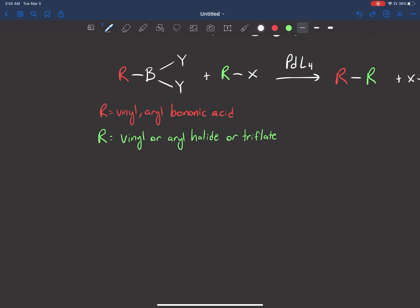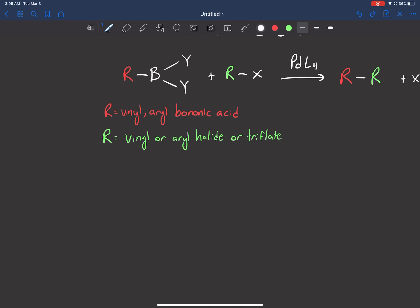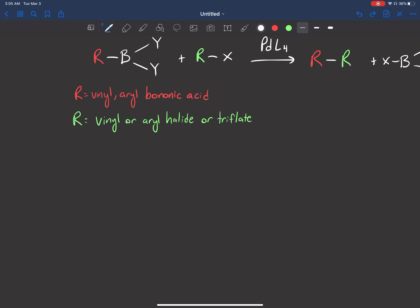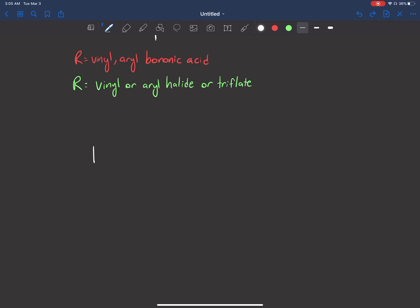So the very first thing, how do we create this boronic acid compound? Usually the way we do it is through hydroboration of an alkyne. So let's use this example here. You have a benzene.